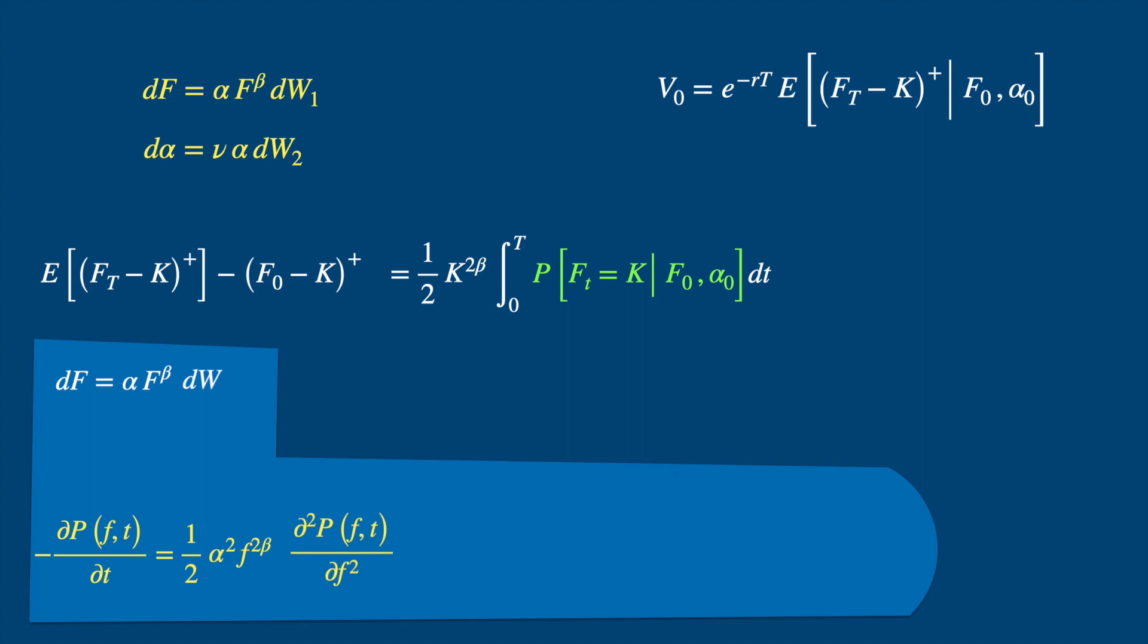And we then have the second stochastic process, alpha. So we will have a similar term for the second process, just one half times the square of the coefficient of the Brownian, times the second derivative with respect to the second process. And then the cross term, which is just the product of the coefficients of the two SDEs, times the correlation and the cross derivative. And we need the terminal condition, which I'm going to leave as an exercise.